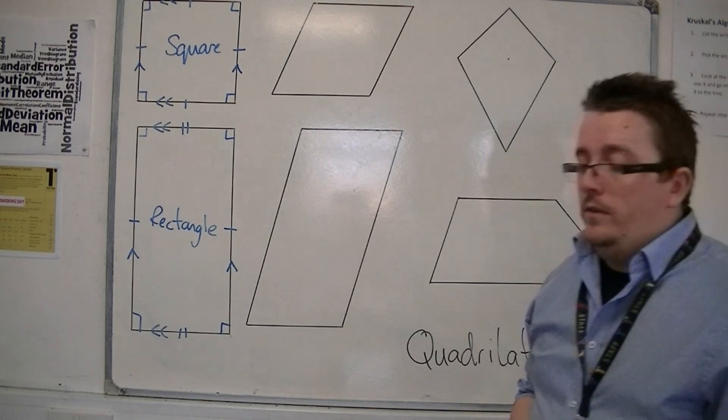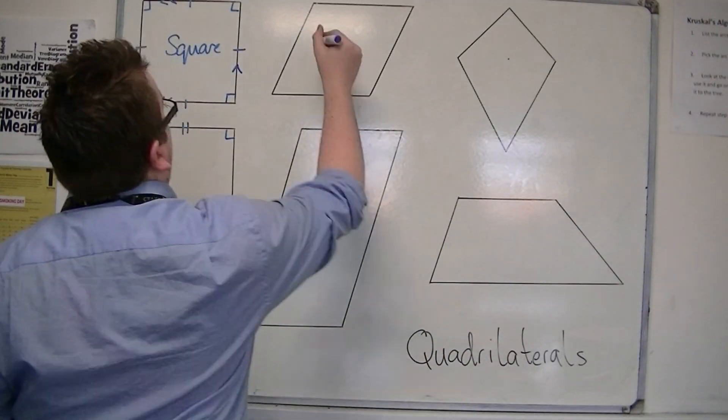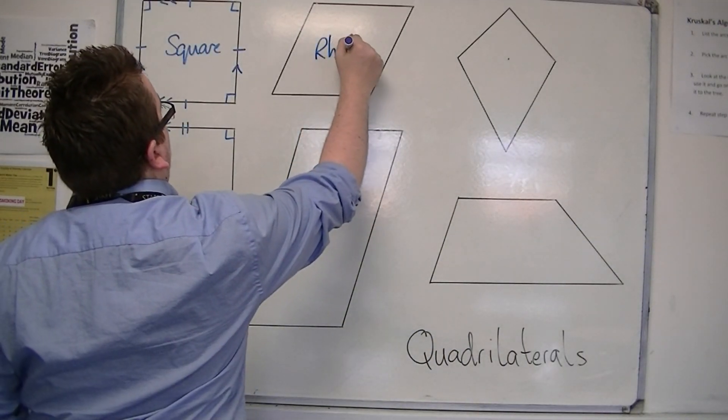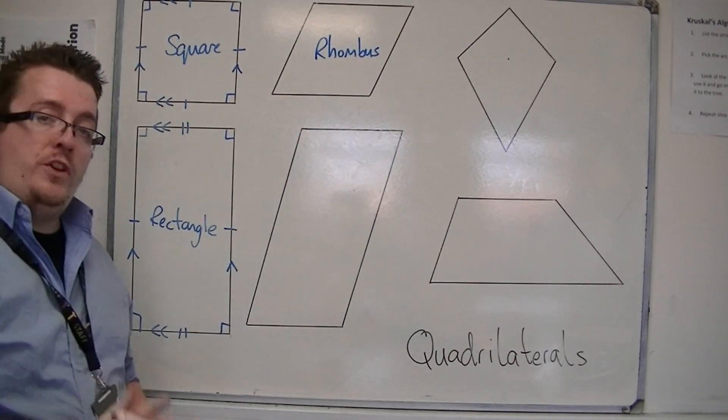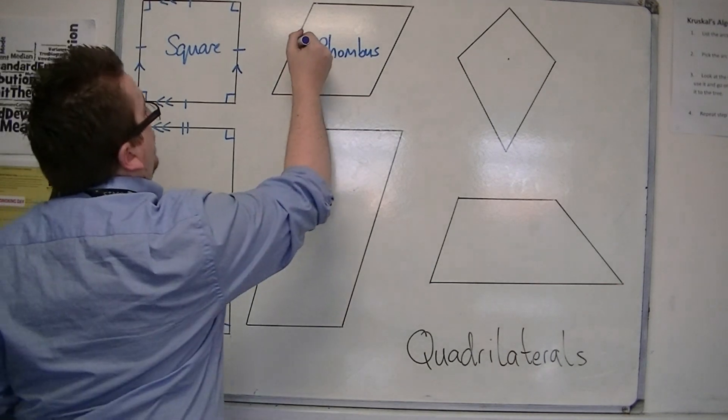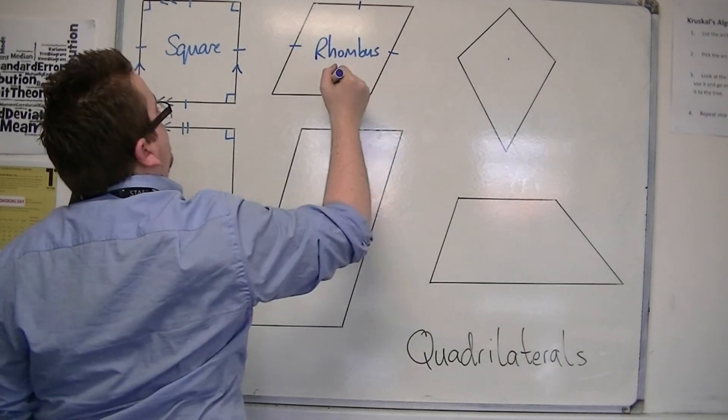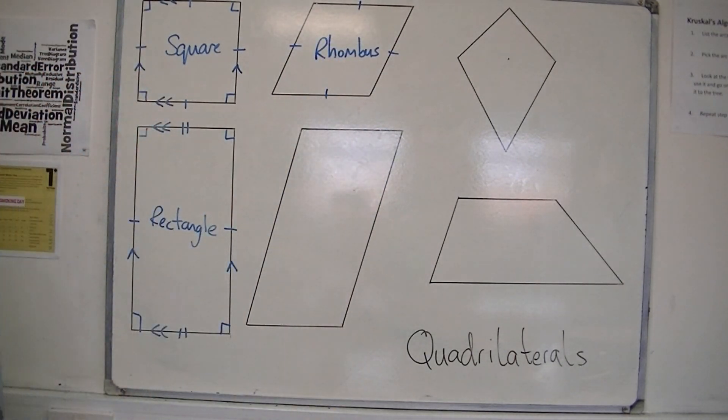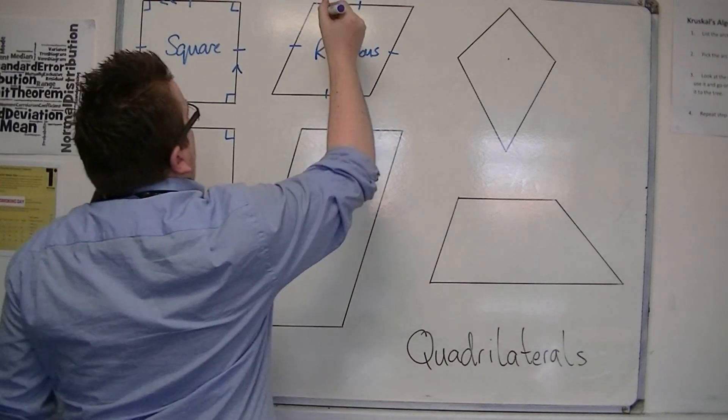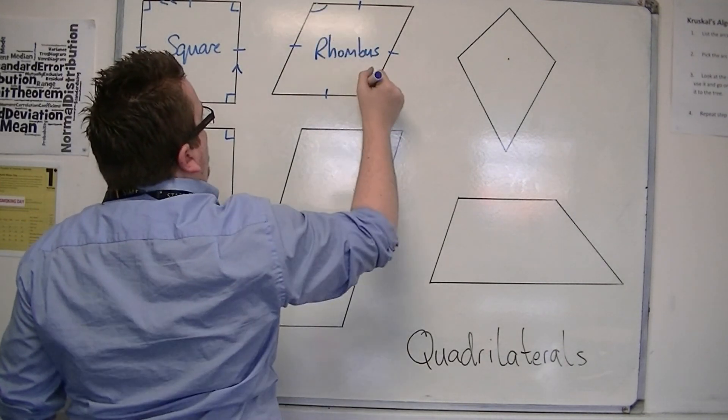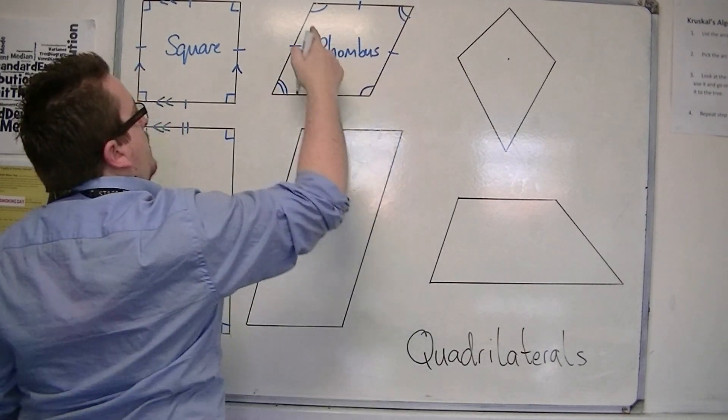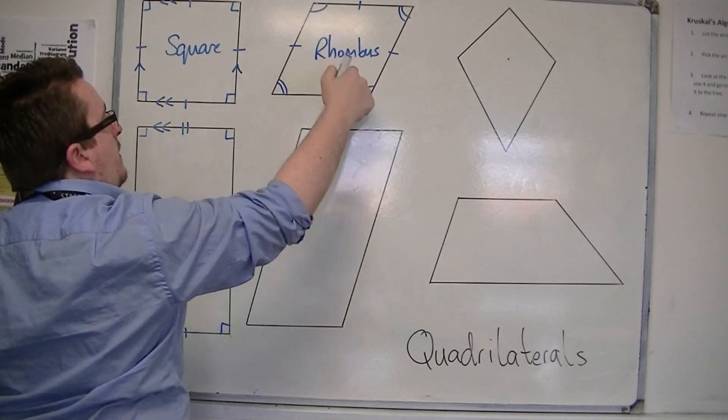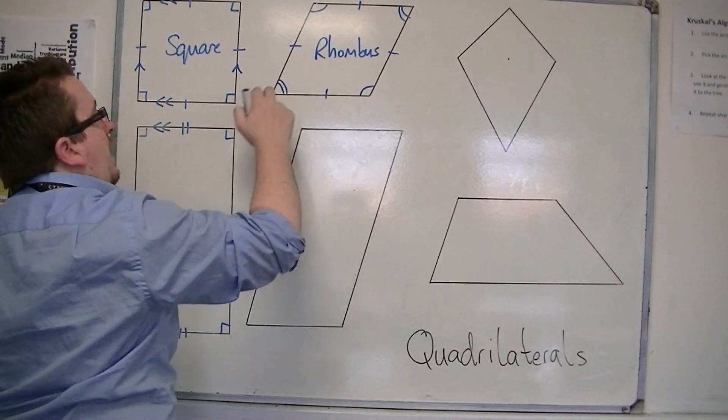Then we have what's known as the rhombus. Now, the rhombus looks like a square that's been shifted over onto its side. It has four sides all the same length. It doesn't have any right angles, but it does have the property that its opposite angles are the same. So this angle is the same as that one. This angle is the same as that one.